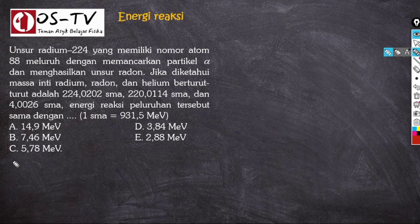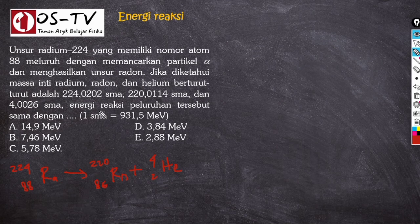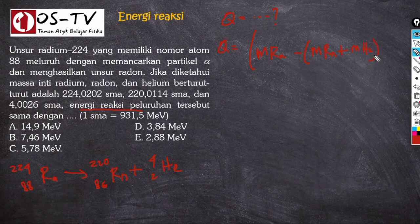Persamaan reaksi peluruhan: ²²⁴₈₈Ra → ²²⁰₈₆Rn + ⁴₂He. Yang ditanyakan adalah energi reaksi Q. Q dapat dihitung dengan persamaan: Q = (massa Ra − (massa Rn + massa He)) × 931,5 MeV/SMA.